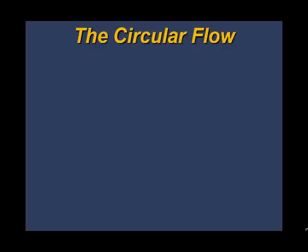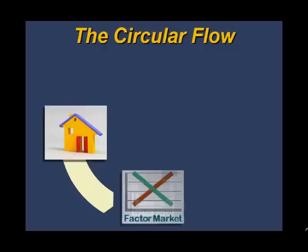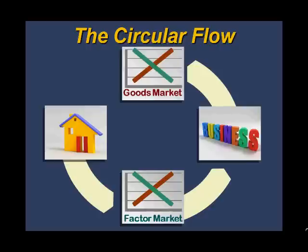For a simple picture, we can use a circular flow diagram that shows the relationship between households and firms. Households supply the factors of production needed for production, with labor services being the most important for most of us. We sell these services and other factors through factor markets. Firms transform these factors into finished goods and services that are in turn sold to households, who pay for them with the income earned by selling their factors to businesses. This exchange takes place in goods markets.